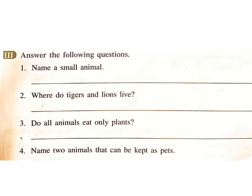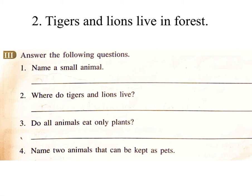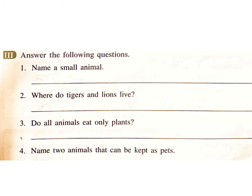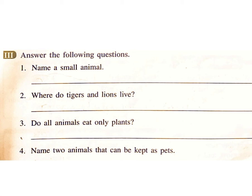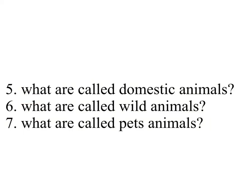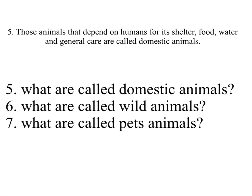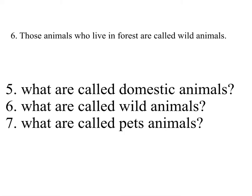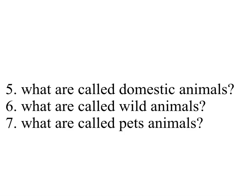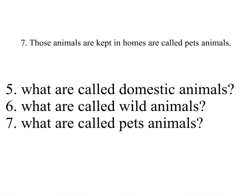1. Name a small animal. Answer: Ants are small animals. 2. Where do tigers and lions live? Answer: Tigers and lions live in the forest. 3. Do all animals eat only plants? Answer: No, some animals eat only plants. 4. Name two animals that can be kept as pets. Answer: Dogs and cats can be kept as pets. 5. What are called domestic animals? Answer: Those animals that depend on humans for shelter, food, water, and general care are called domestic animals. 6. What are called wild animals? Answer: Those animals who live in forests are called wild animals. 7. What are called pet animals? Answer: Those animals that are kept in homes are called pet animals.